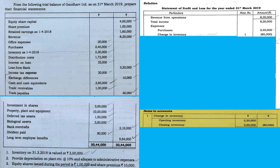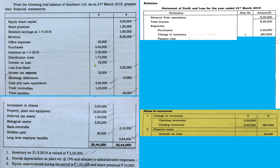Finance cost means all those expenses with regard to any loan or credit obtained by the concern. From the details given, you can see that interest on loan is there. There are no other expenses that come under finance cost. So finance cost includes interest on loan: 32,000. Show that amount here as 32,000.